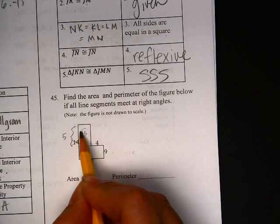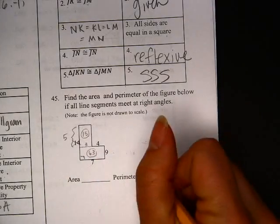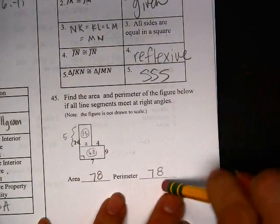So, this is 15 for the area inside here and 63 for the area inside there. So, I add them up and I get, whoops, 78 for the area.